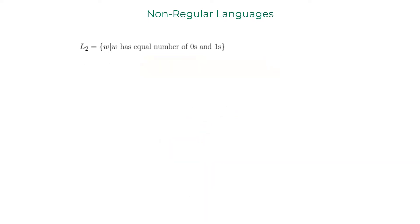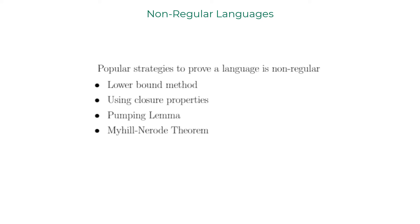Whereas the language L2 is similar to the 0 to the power n, 1 to the power n language that we saw earlier, adding another layer of complexity where the zeros and ones are interspersed with each other. So how do we make sure we have a concrete argument when we want to confidently classify a language as a non-regular language?